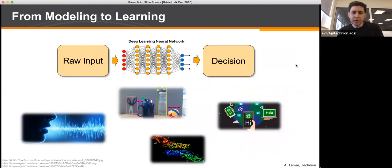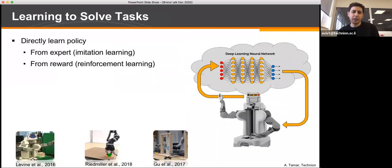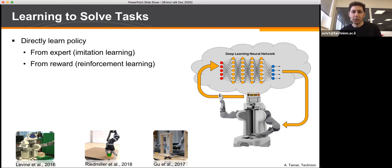In many other decision making fields, the best methods today don't rely on manual modeling. Instead they are data-driven and train deep neural networks to map observations directly to decisions. For example, the best methods for object recognition or speech recognition are based on deep learning. Recently people have thought about using this approach for decision making too — thinking of the robot's policy as just a mapping from observations to actions, replaced by a deep neural network.